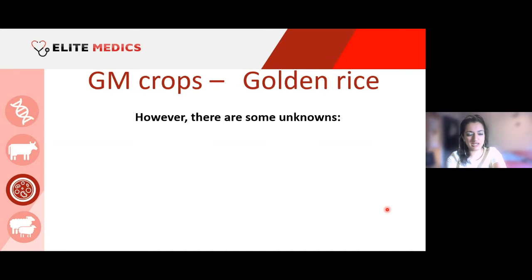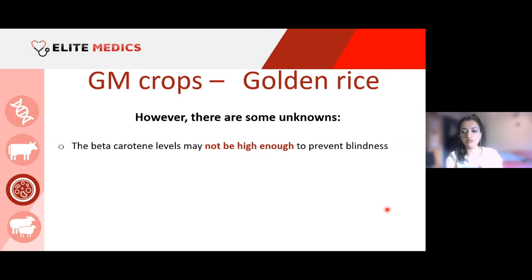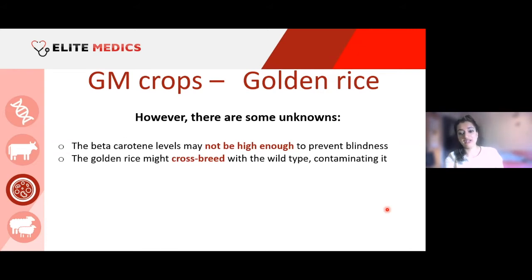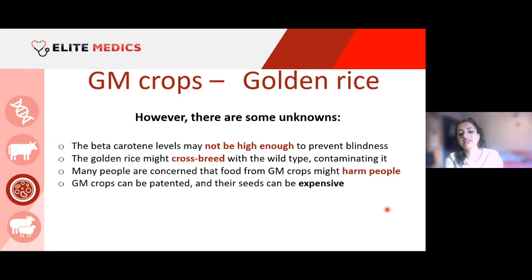However, we don't actually know whether the beta-carotene levels are high enough to prevent blindness — what is our threshold? Also, what is the bioavailability of that vitamin in the body? Golden rice might cross-breed with wild-type rice and contaminate it. Many people worry that food from genetically modified crops may cause harm. GM crops can also be patented, making their seeds very expensive, which undermines the goal of helping needy populations.